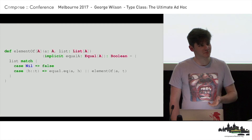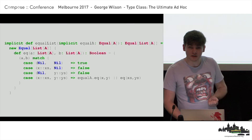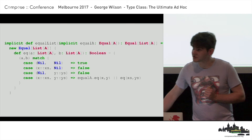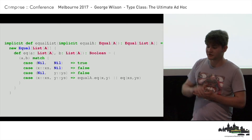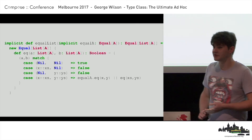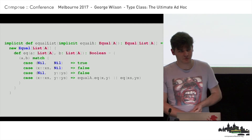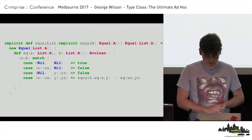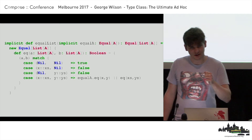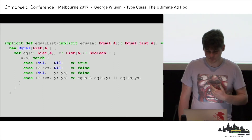Here's our `elementOf` function, which takes an A and a list of As and tells you whether that A is in the list. We have a second parameter of type Equal A, and this parameter is marked as implicit. If you call this method and you leave off that implicit parameter, and there is a definition in scope with the correct type which is also marked as implicit, that value will be passed to this function implicitly. And we can define implicits that depend on other implicits — that is the built-in Scala list. So I can give implicits for other data types that I don't control.